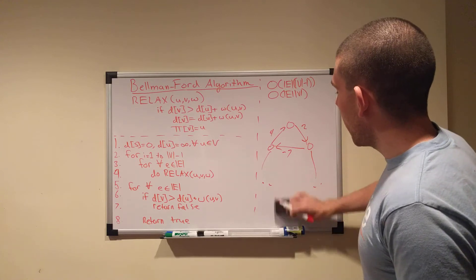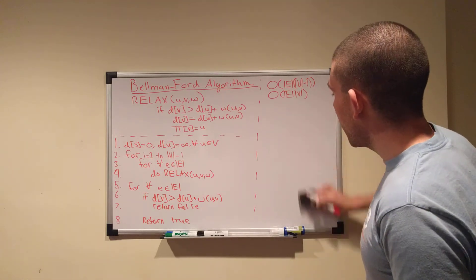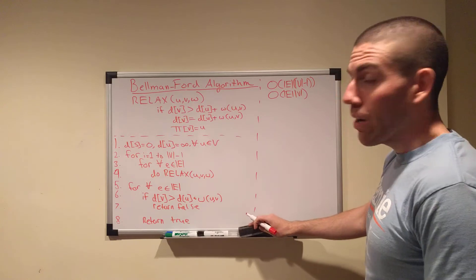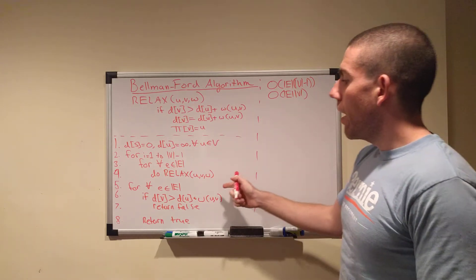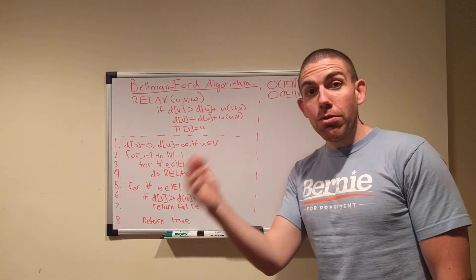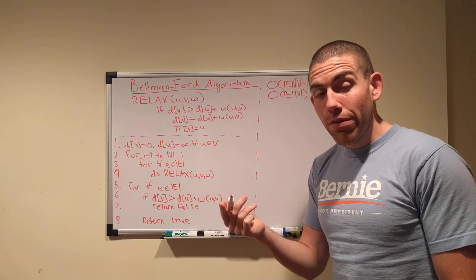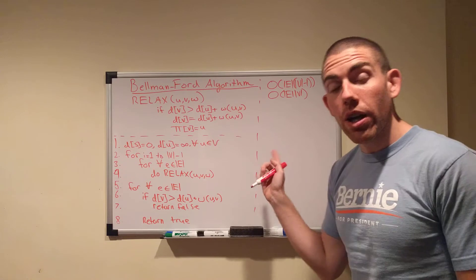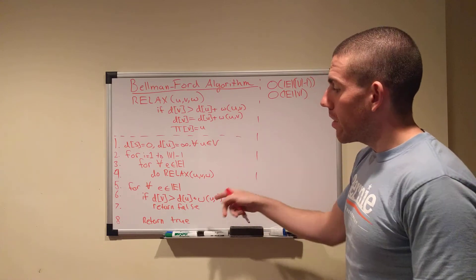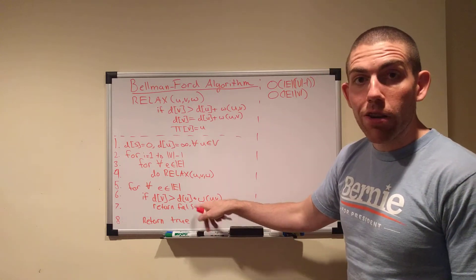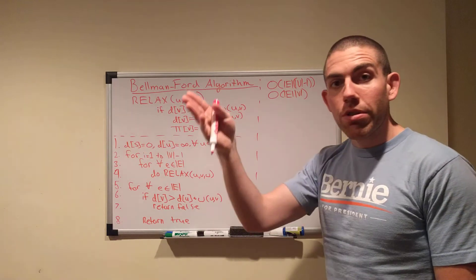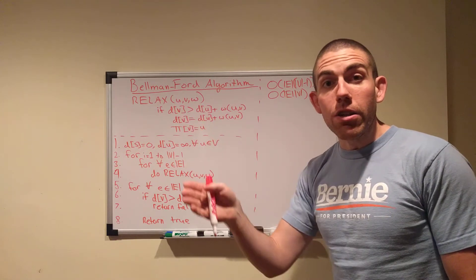So, it's impossible to really effectively compute a shortest path if you've got a negative cycle in the graph. That's why we have to check. And if we find that we can continue to reduce the length of the path after the V minus 1 iterations, then that's what's going on. So, we know we have a negative cycle.